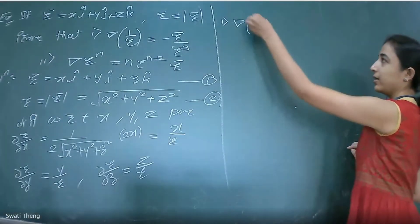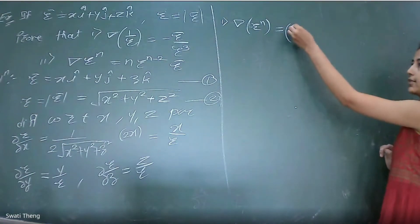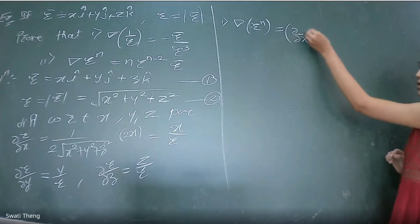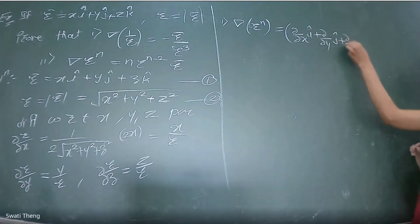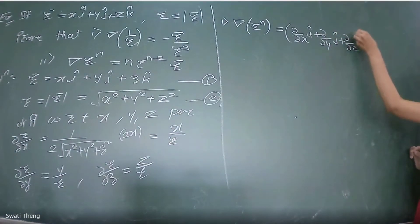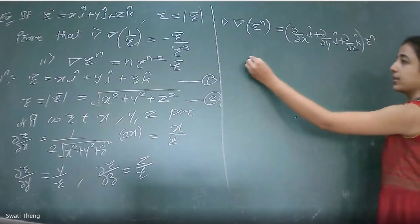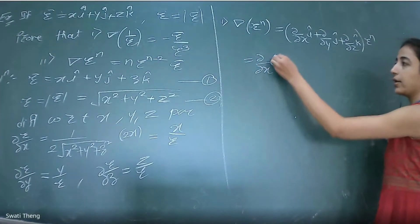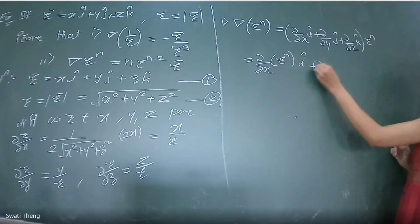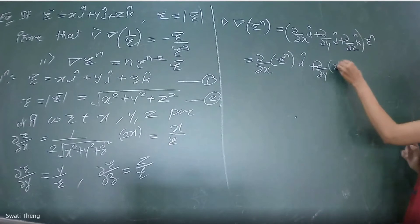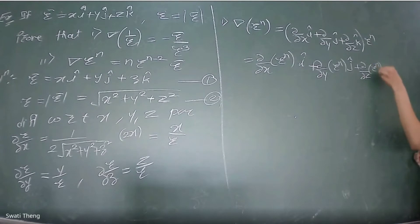Now for ∇(rⁿ): apply the definition directly. ∇(rⁿ) = ∂/∂x(rⁿ)î + ∂/∂y(rⁿ)ĵ + ∂/∂z(rⁿ)k̂. Differentiating each term: the first gives n·r^(n-1)·∂r/∂x î, just like differentiating xⁿ to get nxⁿ⁻¹, but since r is a function of x, y, z we again need the chain rule, giving n·r^(n-1)·∂r/∂x î.